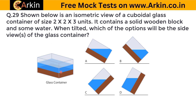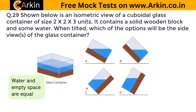It contains a solid wooden block and some water. This is the wooden block, this is the water, and this is the empty space. So it says: when tilted, which of the options will be the side view or views of the glass container? Remember, this is an MCQ, so there could be more than one correct answer. Visually, you can easily see that the water and empty space are equal — it looks like this part has been divided into three equal parts: wooden block, water, and empty space. So when tilted, since water and empty space are equal, they should remain equal.